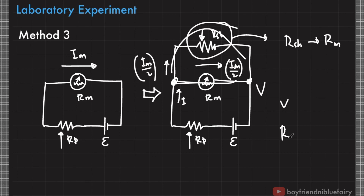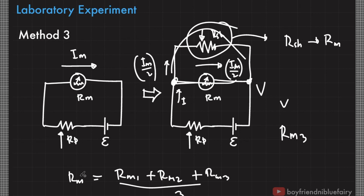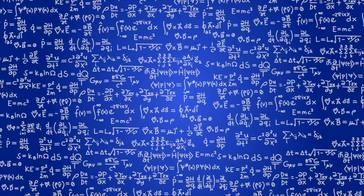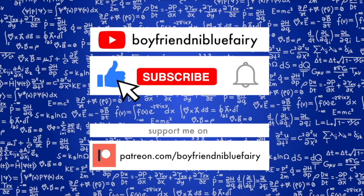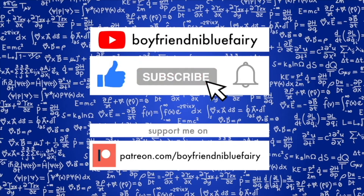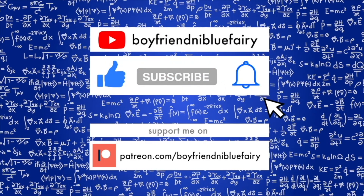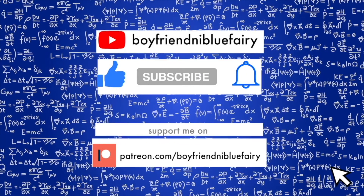Once you achieve this, disconnect the setup — whatever the resistance value of the shunt R_sh is, that is your third value for R_m. Get the average of R_m from all three methods to obtain the average internal resistance of the galvanometer, and then you can proceed with the design of the voltmeter. Don't forget to like this video, subscribe to the YouTube channel, and hit the notification bell for updates.